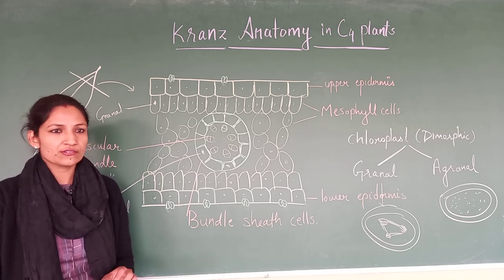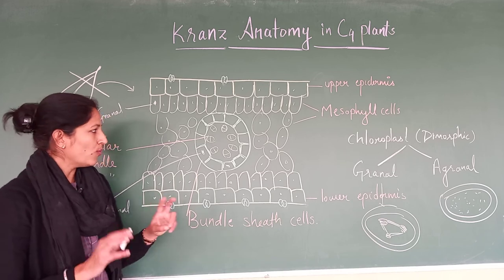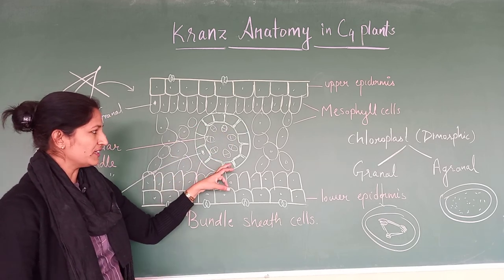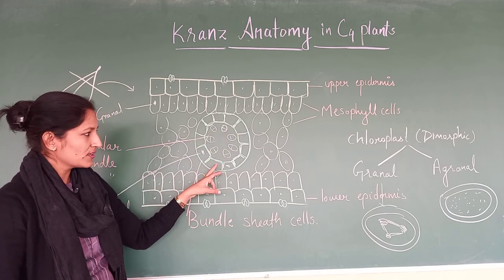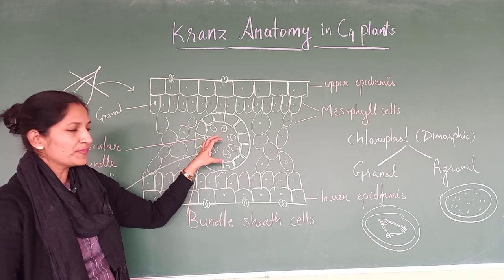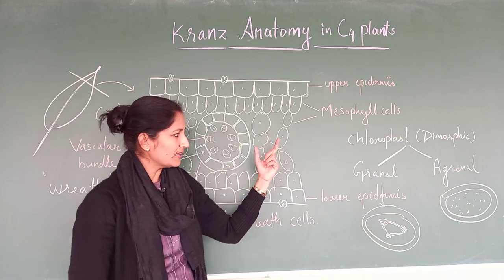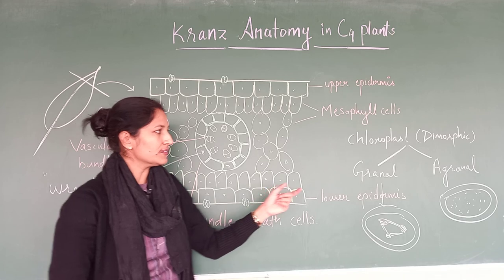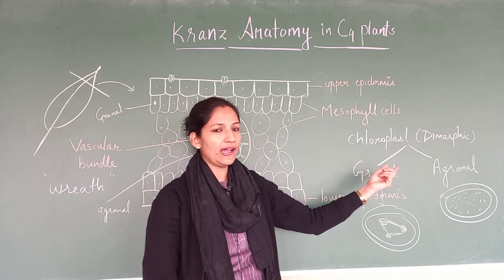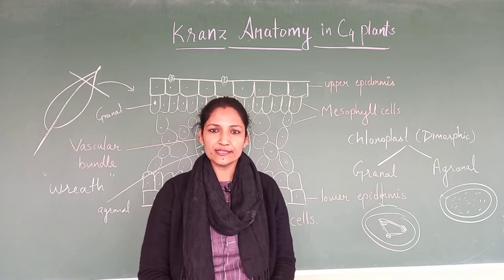So, Kranz anatomy has two special features: one is the presence of bundle sheath cells which wrap the vascular bundle, and the second is that the chloroplasts are of two types — granal and agranal. Thank you.